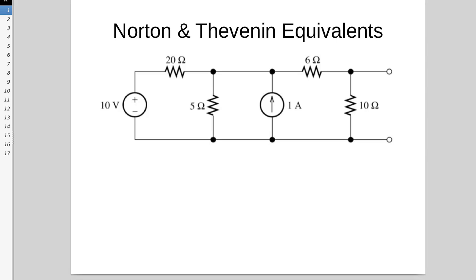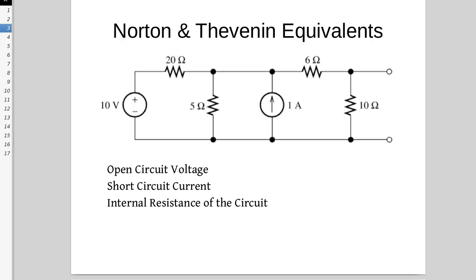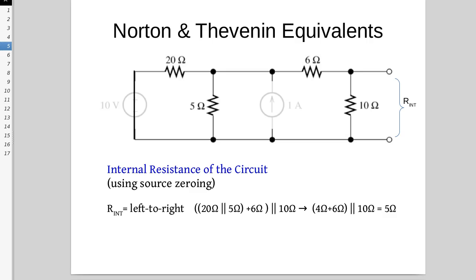Here we have an example that we are going to simplify — take this complex network and simplify it down so we can create either the Norton or the Thevenin equivalent circuit. To do that we need to find any two of the three required values. In this one we are going to go straight into finding the internal resistance of the circuit using source zeroing. We will simply zero out the two existing sources: the current source is removed and the voltage source is replaced by a short circuit.